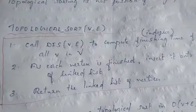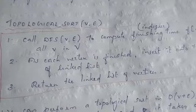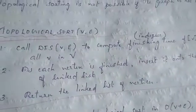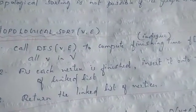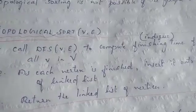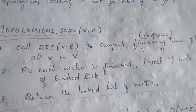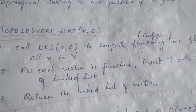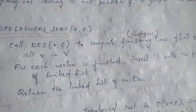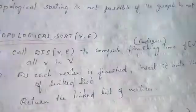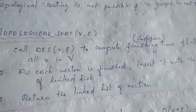What we are doing is: we have all the vertices and their in-degrees. We traverse all the vertices, we traverse the graph, and we call DFS of vertex and edges to compute the finishing time F of V for all V in V.